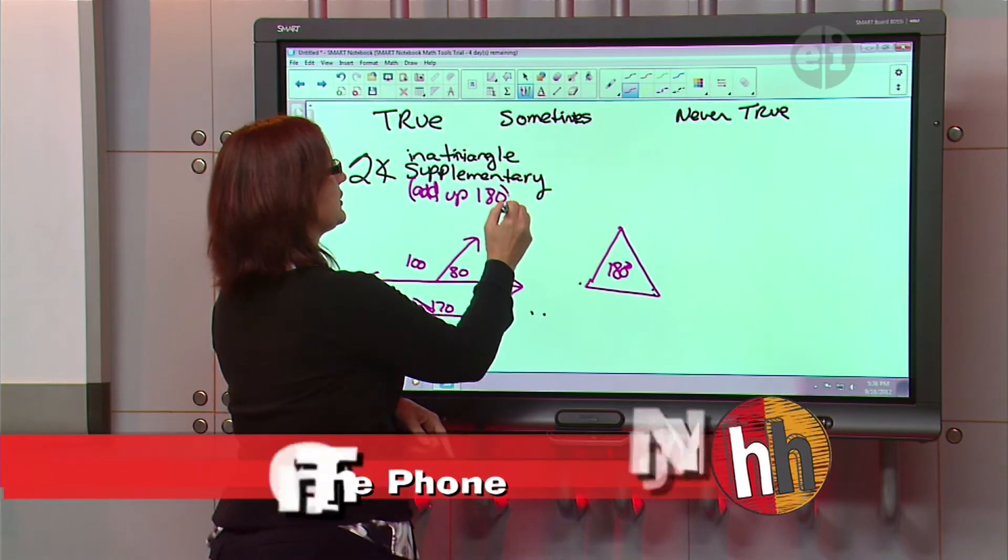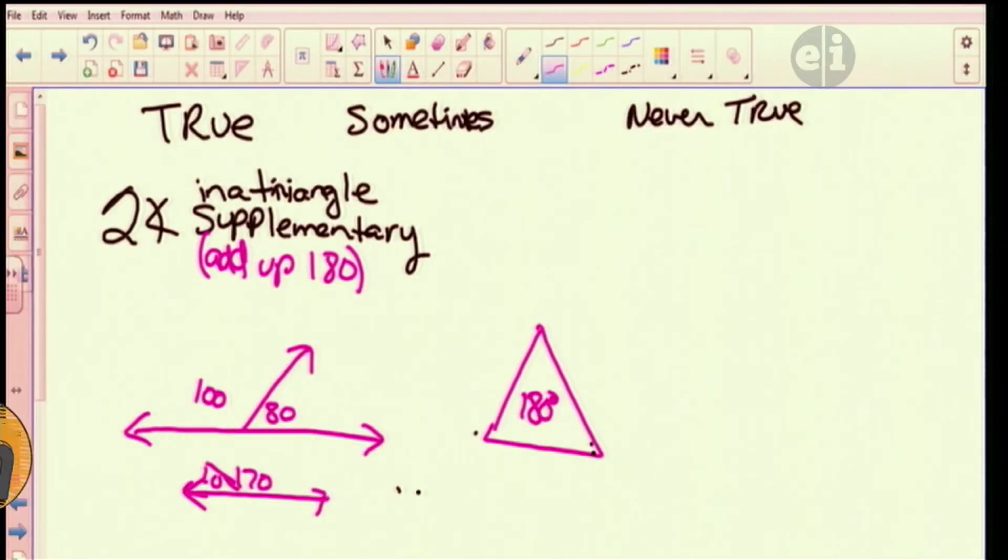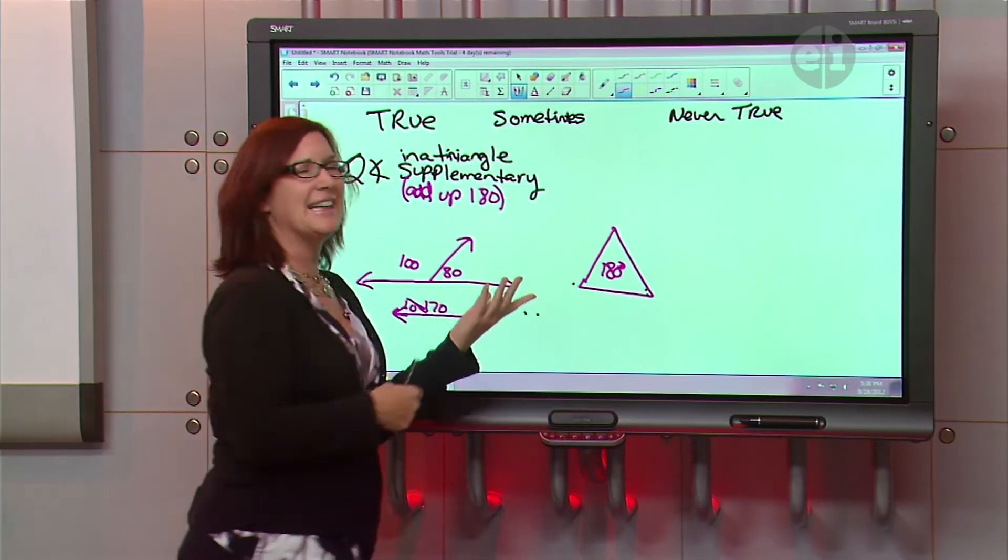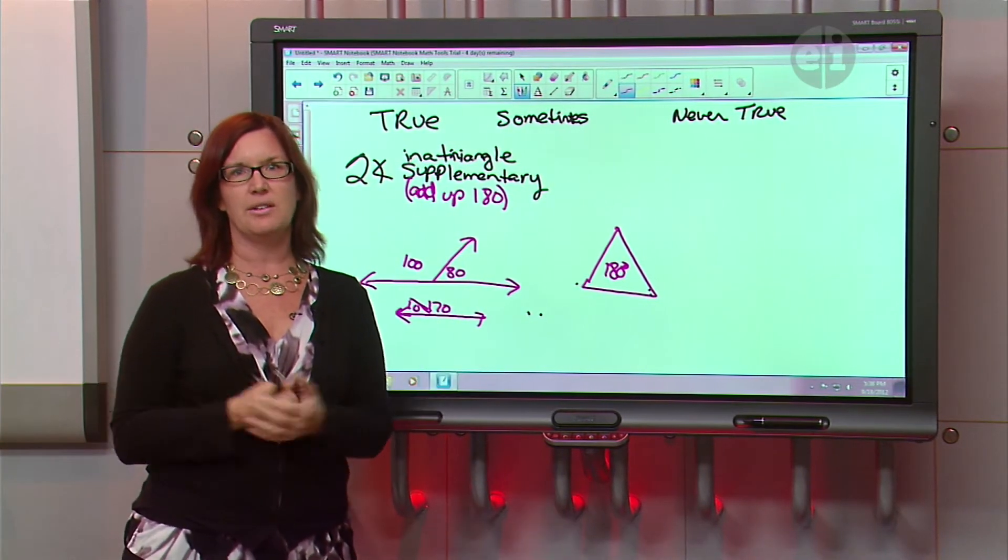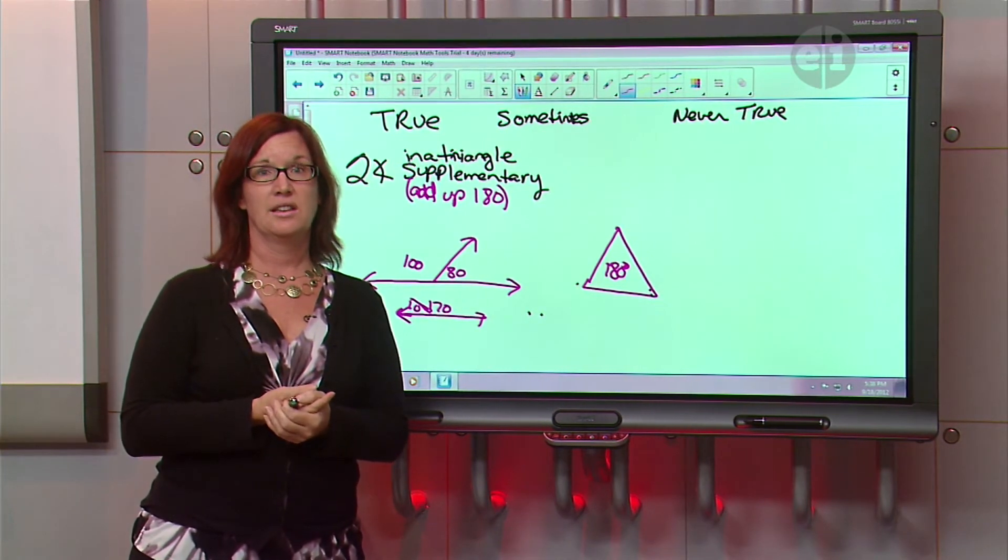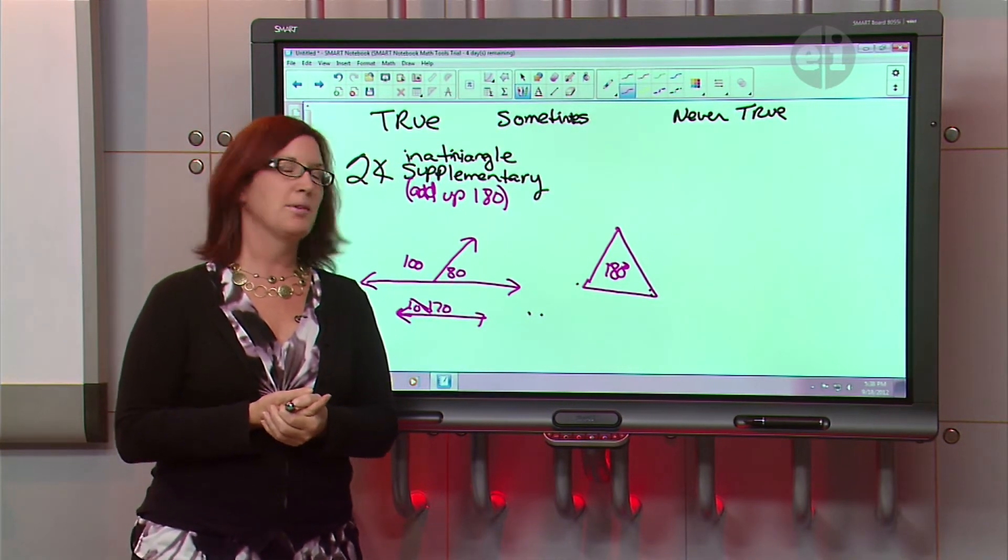So these two pieces right here are gonna add up to 180 degrees. So if the two corners use up all the 180, that last angle's gotta be zero. Can you have an angle of zero degrees in a triangle? I don't believe so, no. You cannot. You're right.